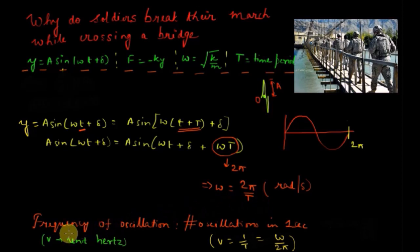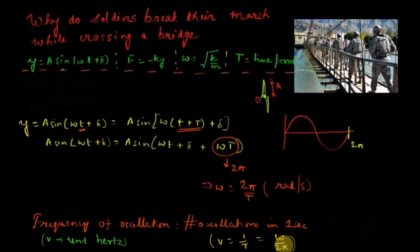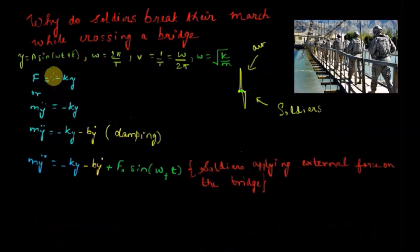Now let's define frequency of oscillation — it is the number of oscillations made in one second. If the time period is T, the particle makes one oscillation in time T, so in one second it makes 1/T oscillations, which is the frequency. Substituting 1/T = ω/2π, we get frequency f = ω/2π, and the unit of frequency is hertz.